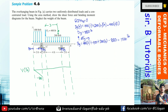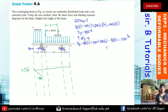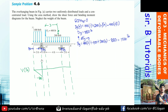At point B, we have reaction By acting upward with a value of 1,520 pounds. Coming from negative 800, we add 1,520: negative 800 plus 1,520 equals positive 720. So the shear jumps up to 720 pounds just to the right of B.